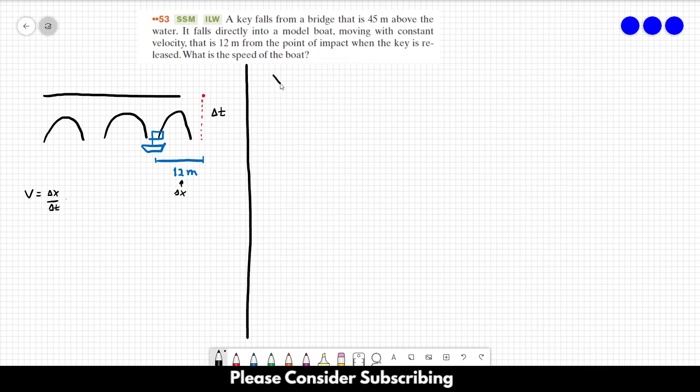by using x equals x₀ plus V₀t plus at² over 2. So let's say that...